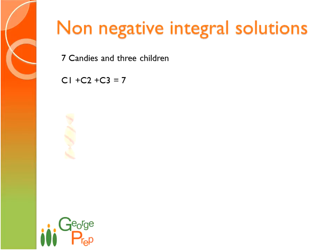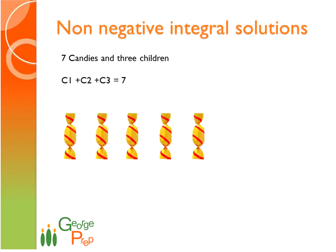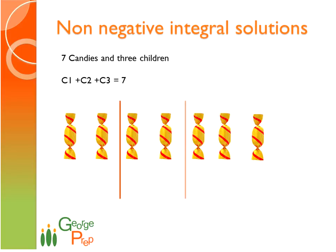Let's put down the candies: 1, 2, 3, 4, 5, 6, 7. And let's place two lines somewhere between these candies — one here and one here. The number of candies to the left side of the first line is what we give to the first child, that is 2 candies. The number between the first and second line goes to the second child — also 2 candies. And whatever is to the right of the second line goes to the third child, that is 3.